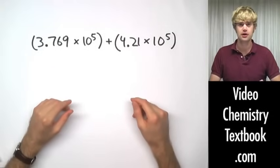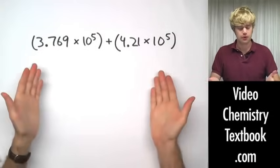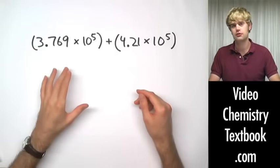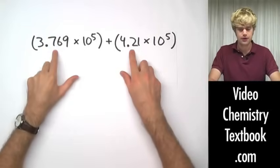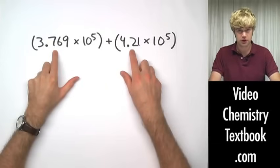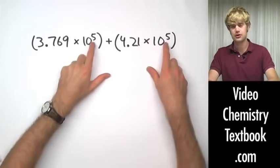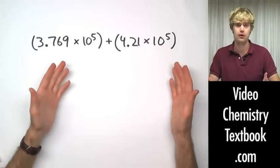Okay, addition and subtraction with scientific notation. As you'll probably remember, each number that's written in scientific notation has two parts. This, which we can call the coefficient or the mantissa, and this 10 raised to an exponent, we can just call it the power.